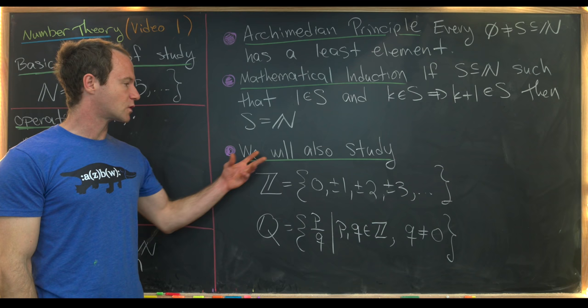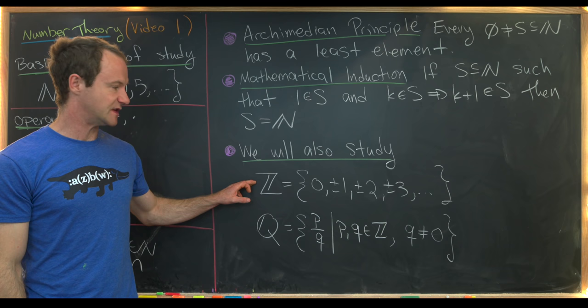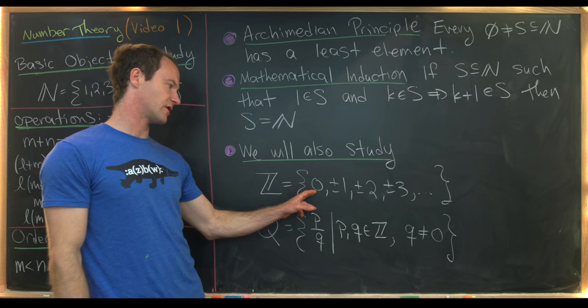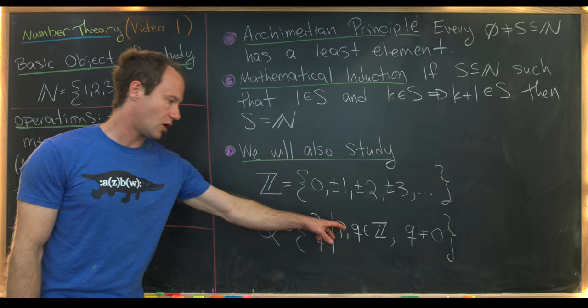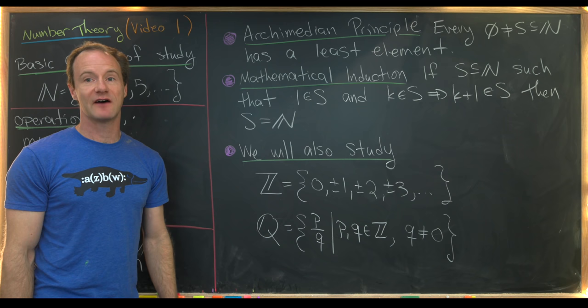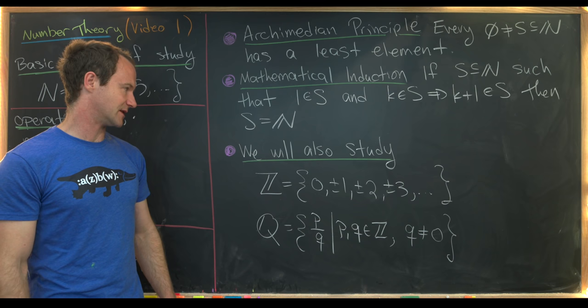We're also going to study the following sets, which are extensions of the natural numbers. The integers are all positive and negative natural numbers and zero: 0, ±1, ±2, ±3, and so forth. We'll also look at rational numbers — that'll be all ratios of integers where the denominator is not zero, like one-half, one-third, minus 99 over 54,000, and so on.